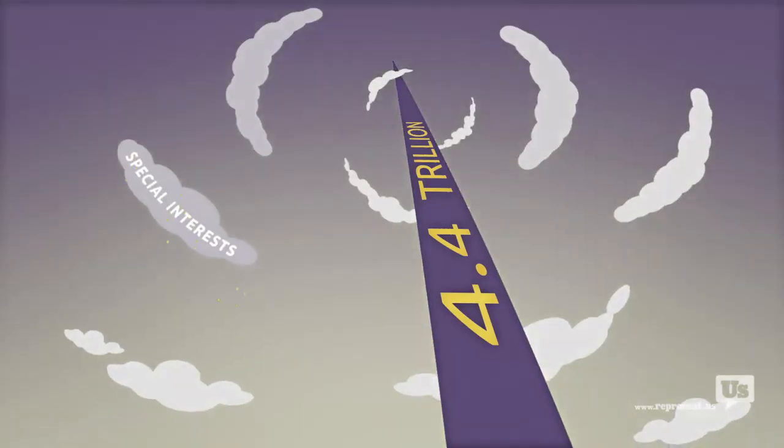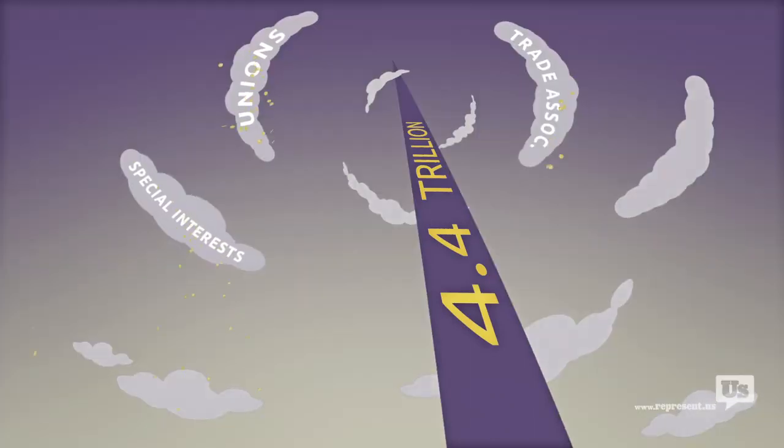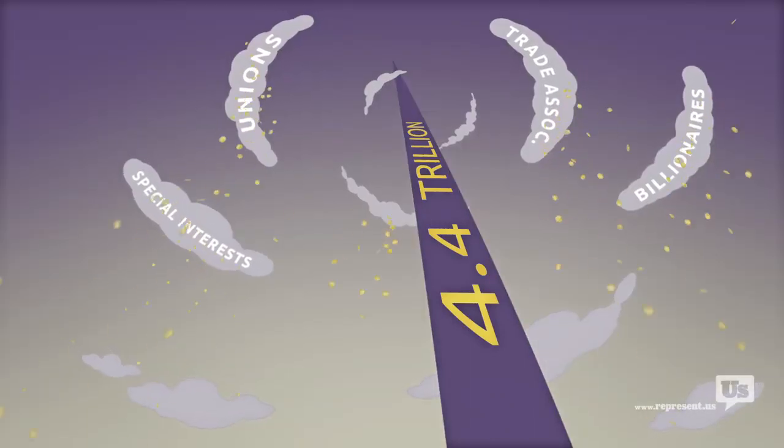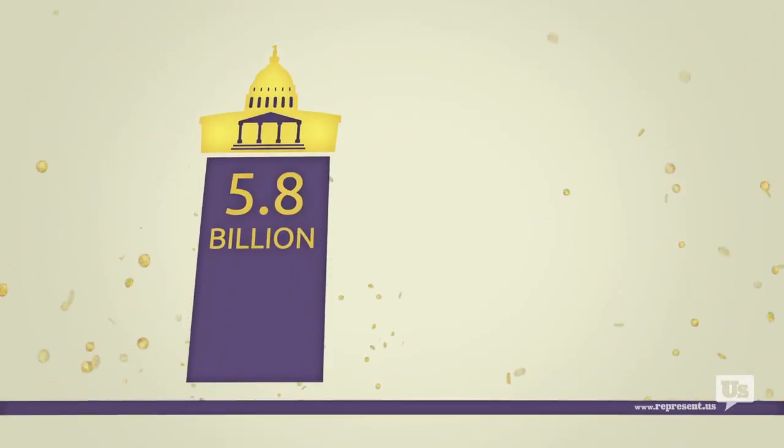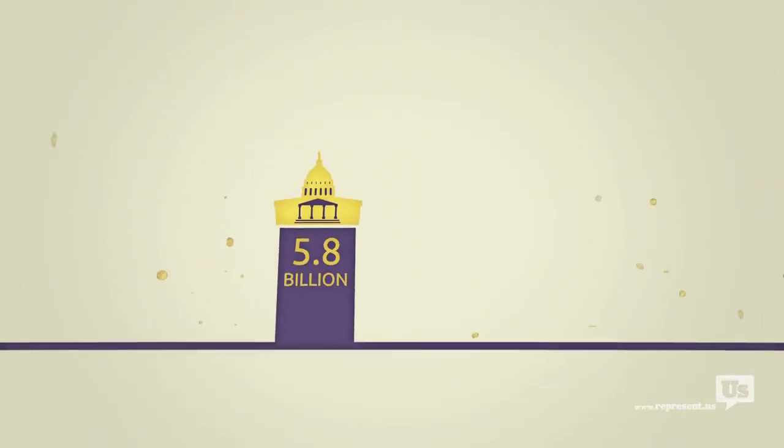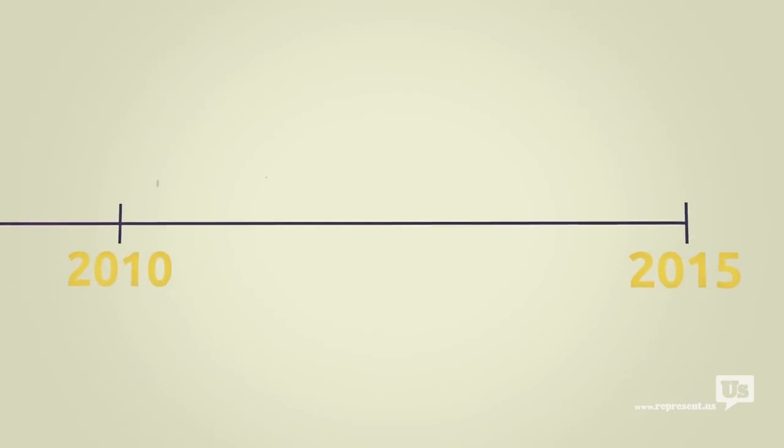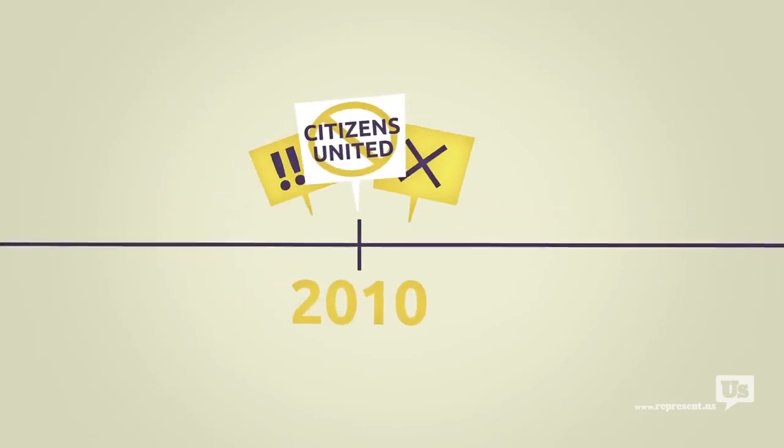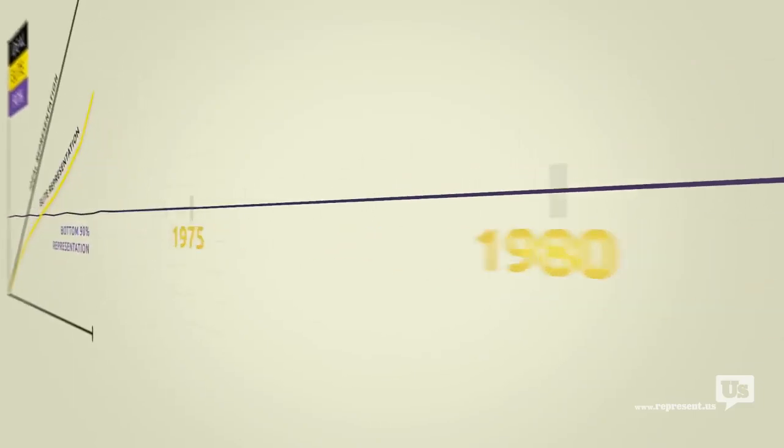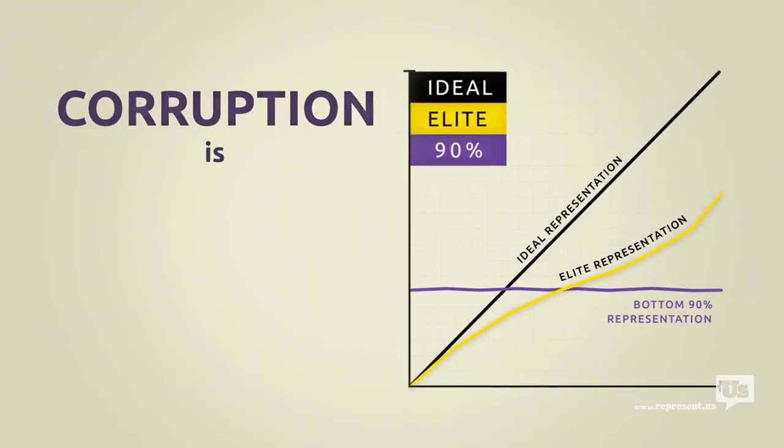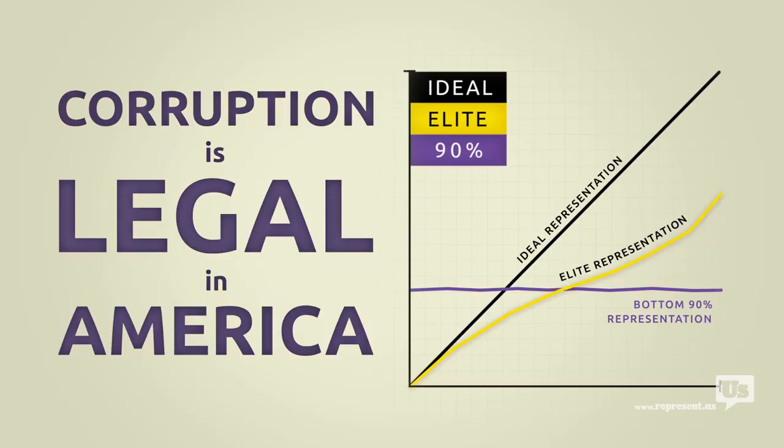Never mind every other special interest, every union, every trade association, and every billionaire. Every single one of them can use their money to buy political influence. You know, there's this idea out there that this only became a problem after the Supreme Court's Citizens United decision in 2010. But the data goes back almost 40 years, and the results are clear. Corruption is legal in America. And as long as it is, anyone who can spend money to buy political influence will.